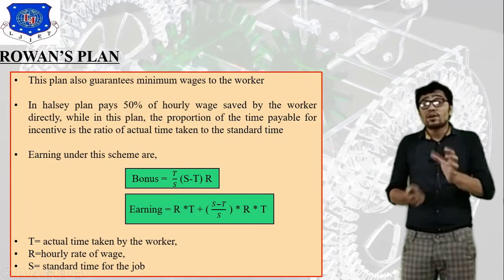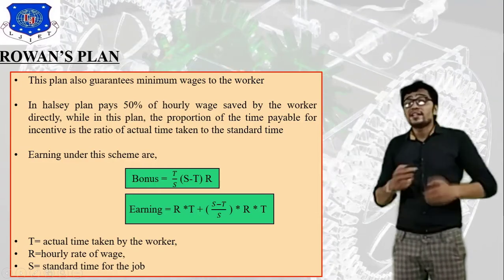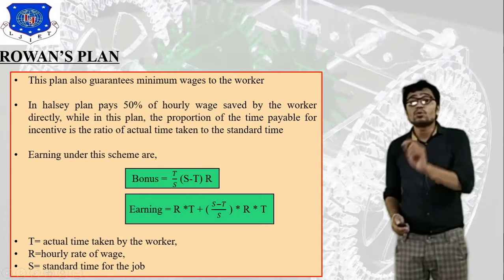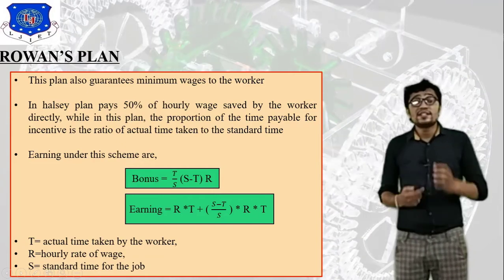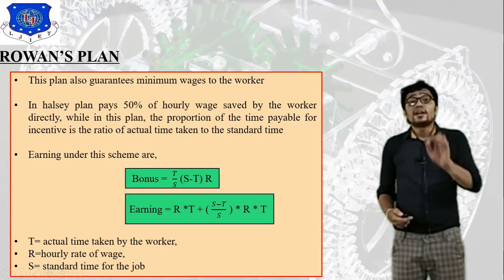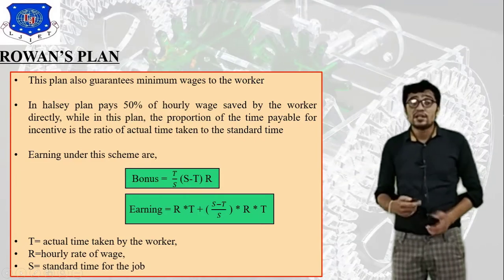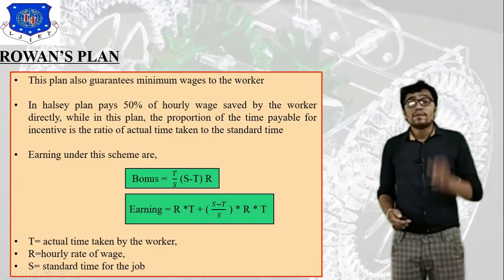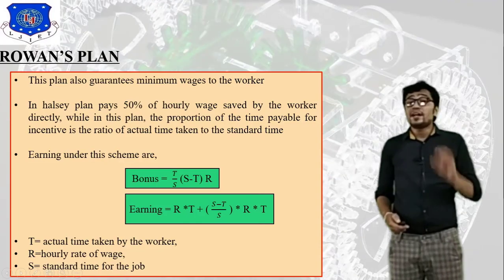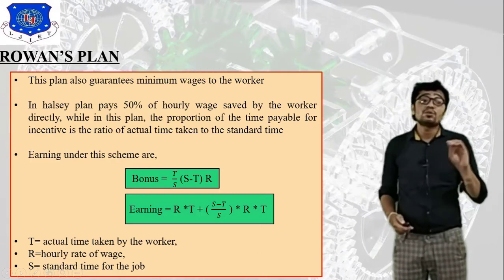The equation for total wage under Rowan's plan is: Bonus = (T / S) × (S − T) × R, and Total Wage = R × T + (S − T) / S × R × T. Capital T is the actual time taken by the worker, capital R is the hourly rate of wage (constant), and capital S is the standard time for the job.